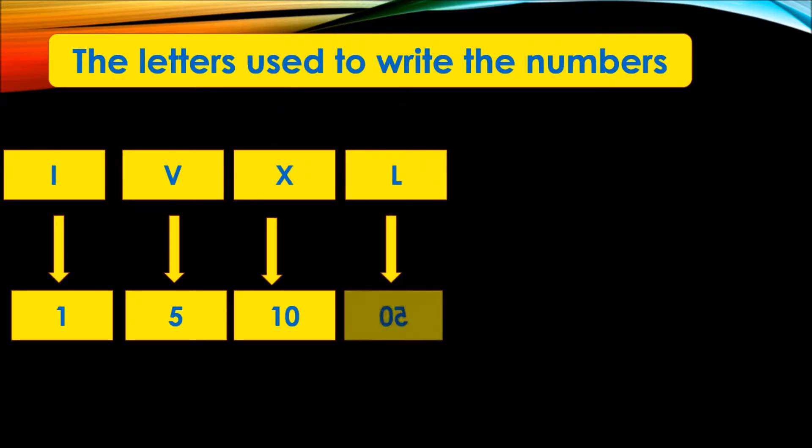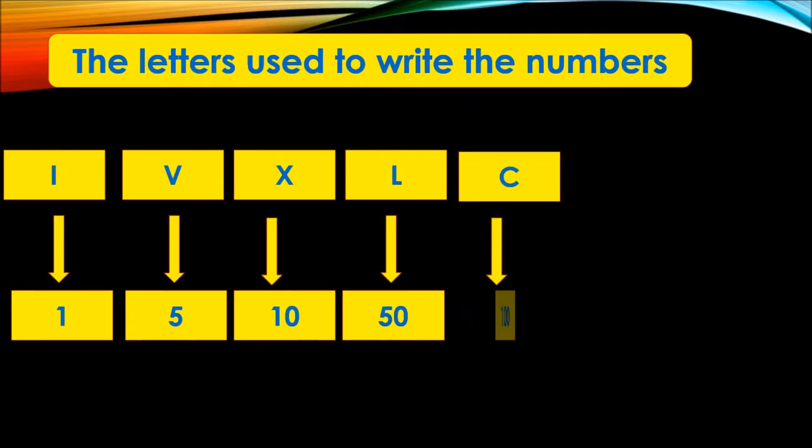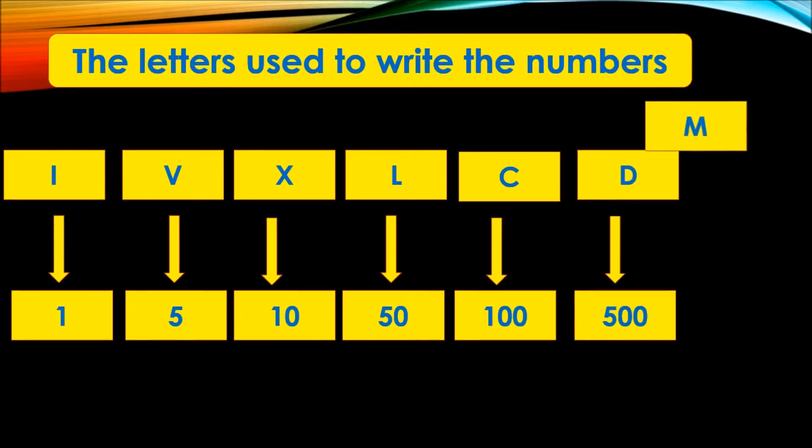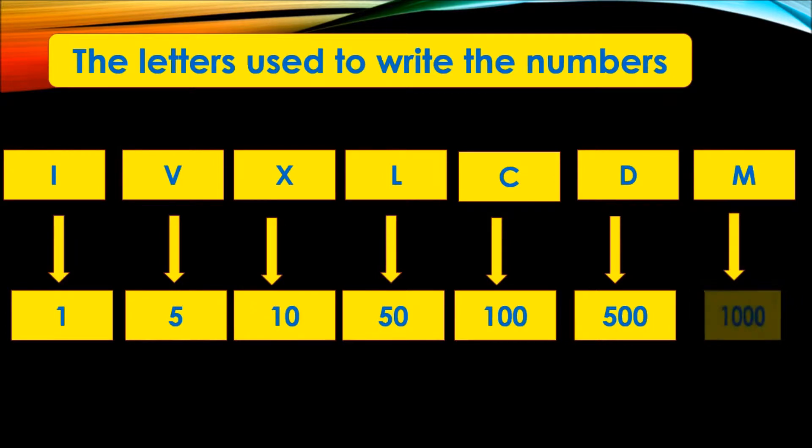C for one hundred, D for five hundred, and M for one thousand. These are the letters used to write the Roman numbers.